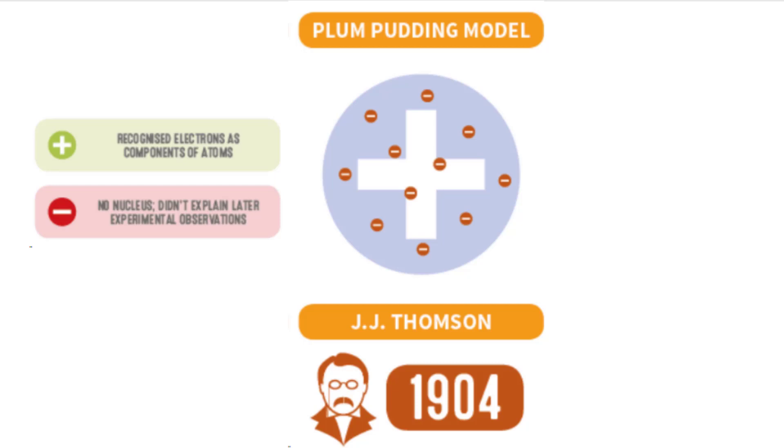But what's the big disadvantage of his model is, he knew nothing about the nucleus. He didn't know that there was any positively, he just thought this kind of cookie part was positive, and these chocolate chips were negative there.